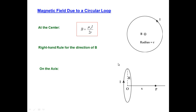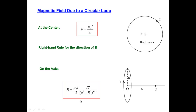There's also the case where we want to know the magnetic field not at the center of the loop, but at a point on the axis, a distance x away from the center. Working this out from the Biot-Savart Law with calculus gives a result that depends on both x and the radius. We can verify this: if I plug in x equals 0, bringing point P to the center, I get big R squared over big R cubed — which is 1 over R — giving mu-naught I over 2R, exactly matching the equation for the center of the loop.